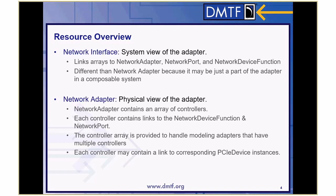The physical view of the adapter in a chassis is the network adapter. It contains all of the device functions — regardless of which systems they're assigned to — that are on that adapter, and it contains all the ports on that adapter. So it's really the controller that handles all the multiple device functions. Each controller may contain a link to corresponding PCI device instances so that you know the PCI device, whereas network interface probably has the PCI functions.